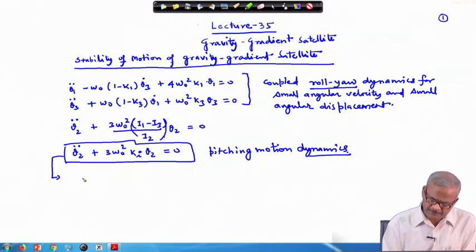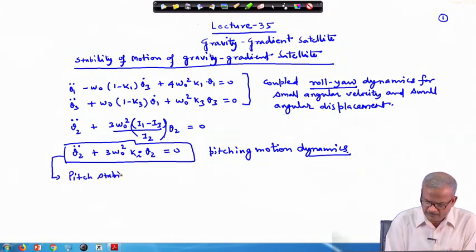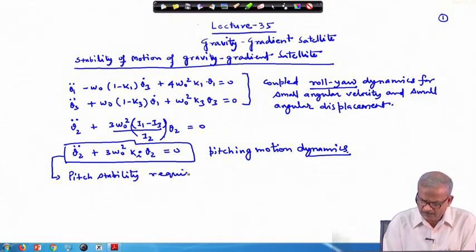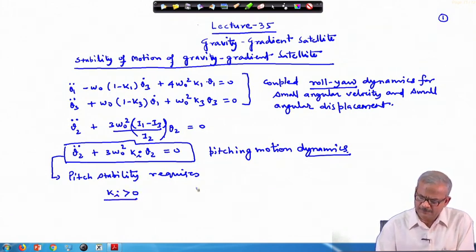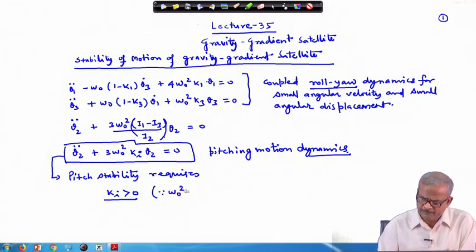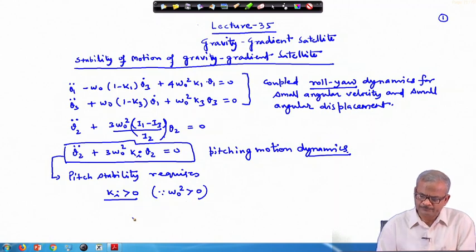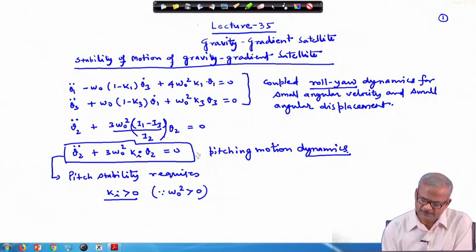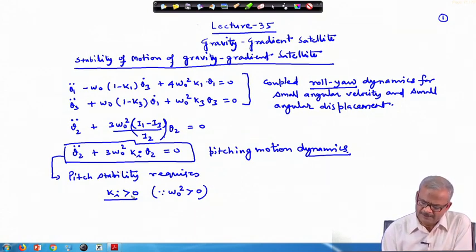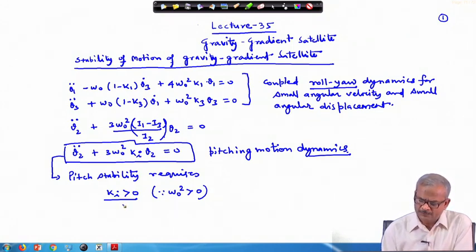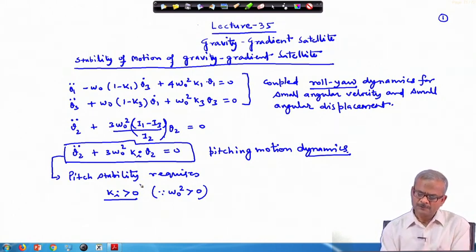The stability of the motion for pitching — pitch stability requires that k_i should be greater than zero, because omega_0 squared is already greater than zero. In that case it is obvious that this motion is of the same format as simple harmonic motion. So if k_i is greater than zero, the pitch motion is going to be stable.